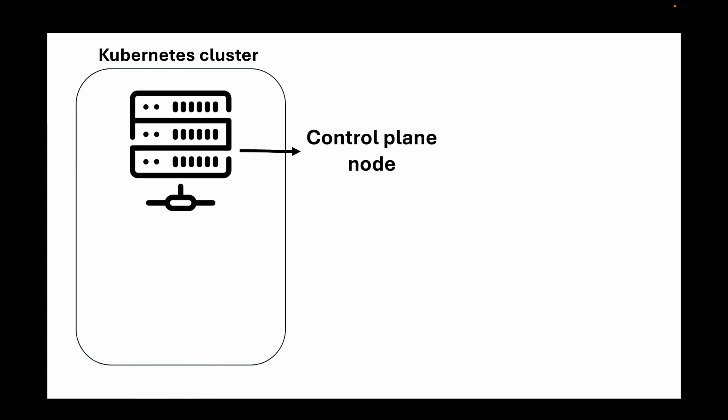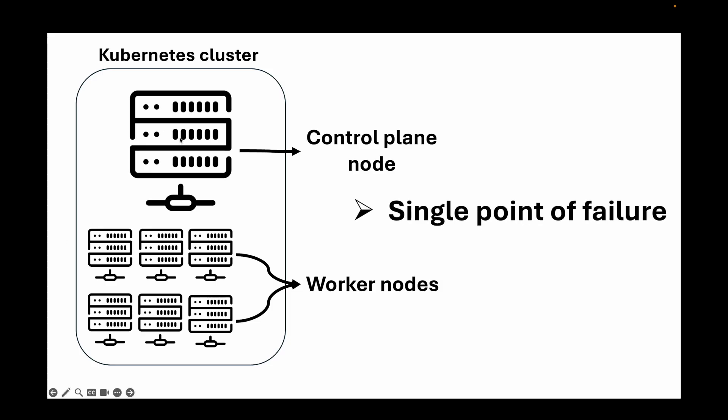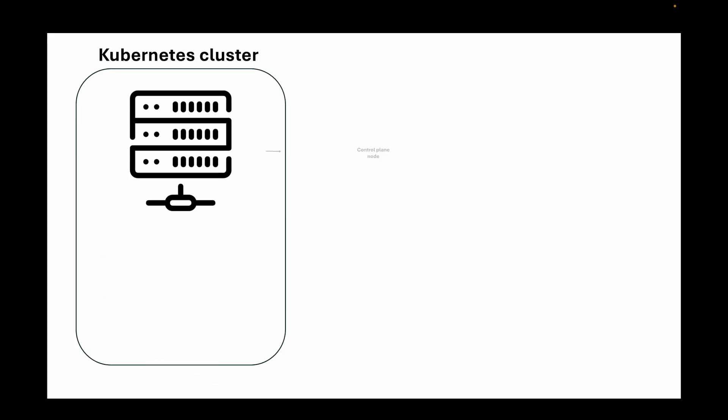When we talk about the Kubernetes cluster, we have the control plane and then the worker nodes. Generally, we will have one control plane and multiple worker nodes. As a best practice, it is recommended to have three to five control plane nodes to provide high availability. Having only one control plane creates a single point of failure — if something goes wrong, the whole cluster goes down.